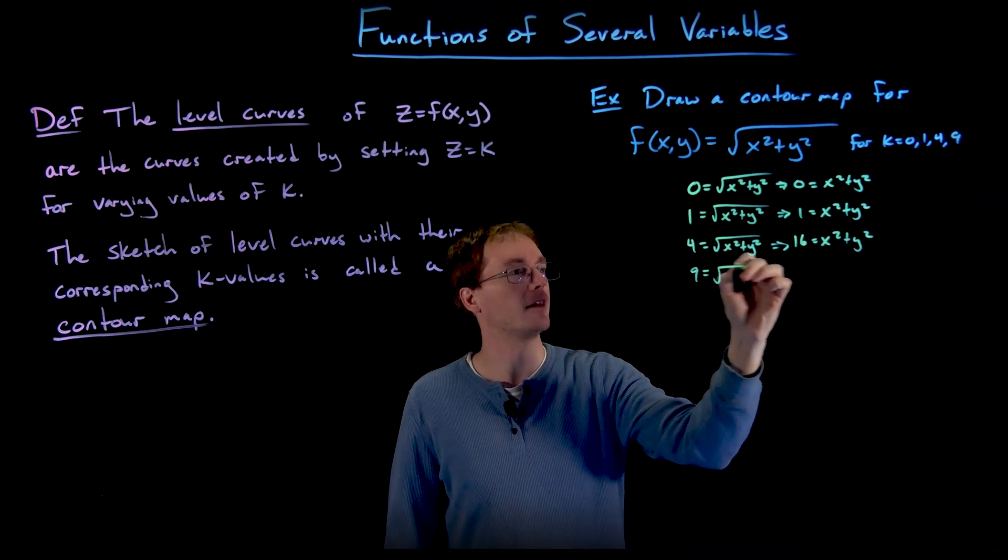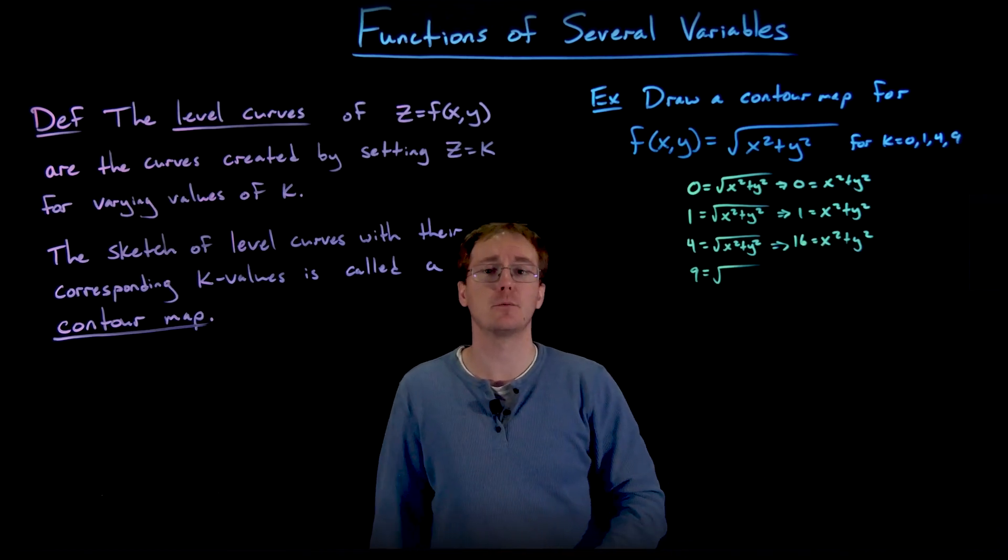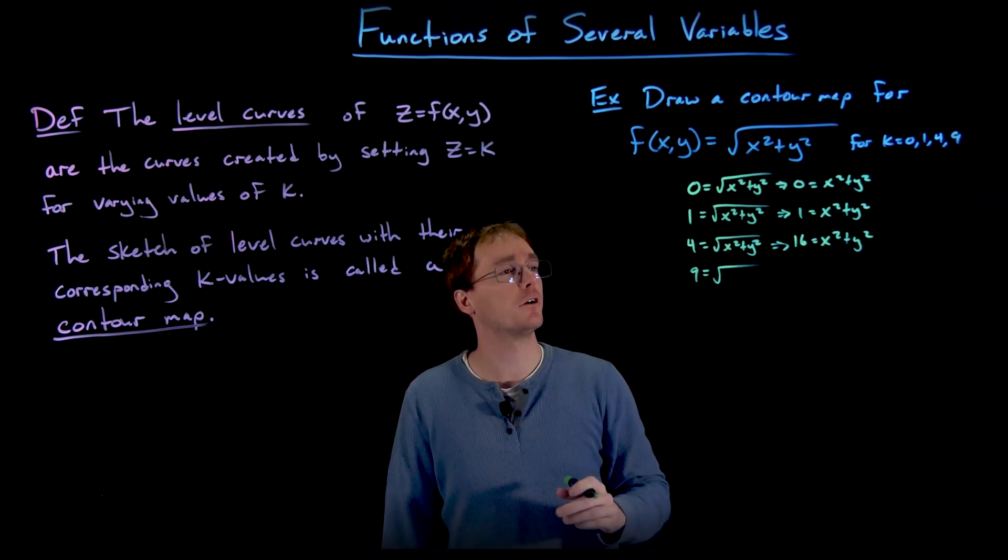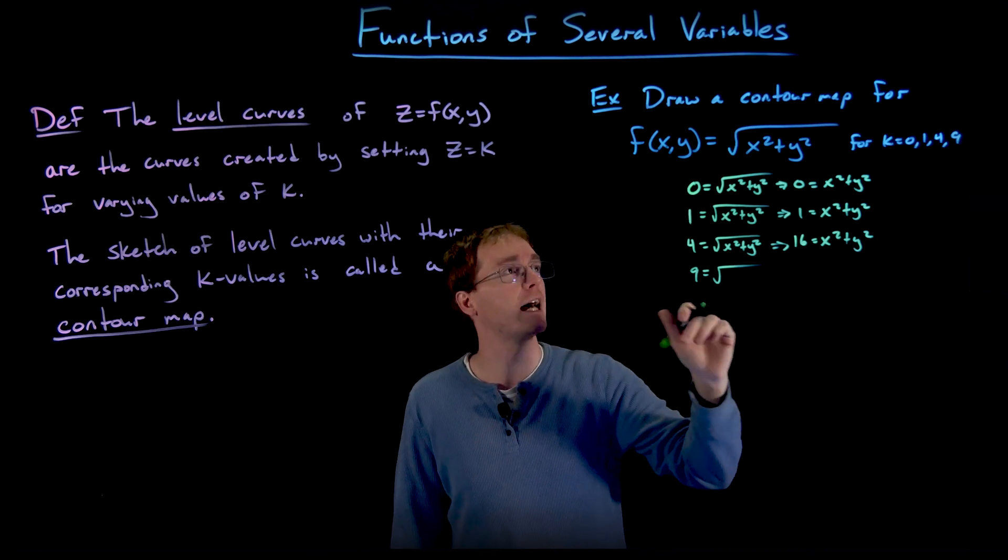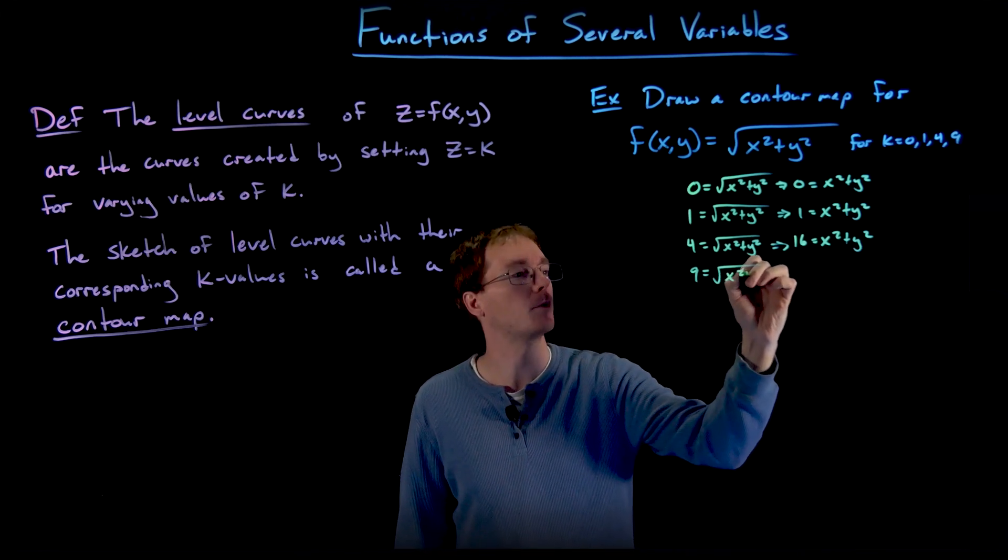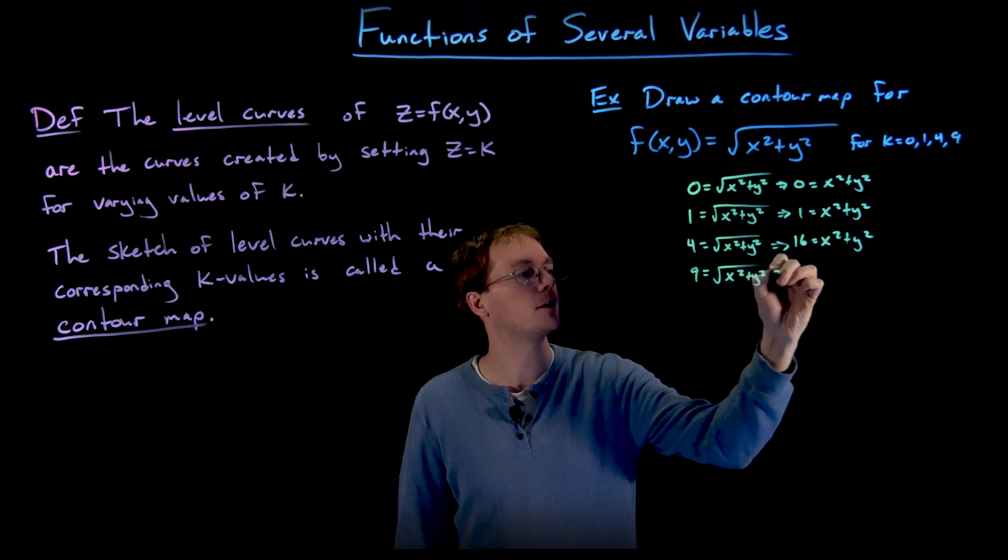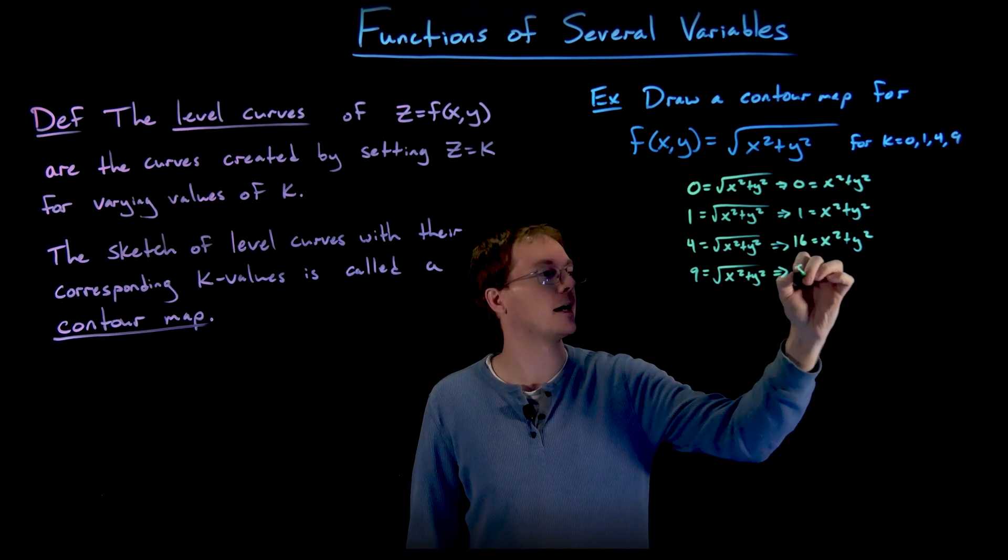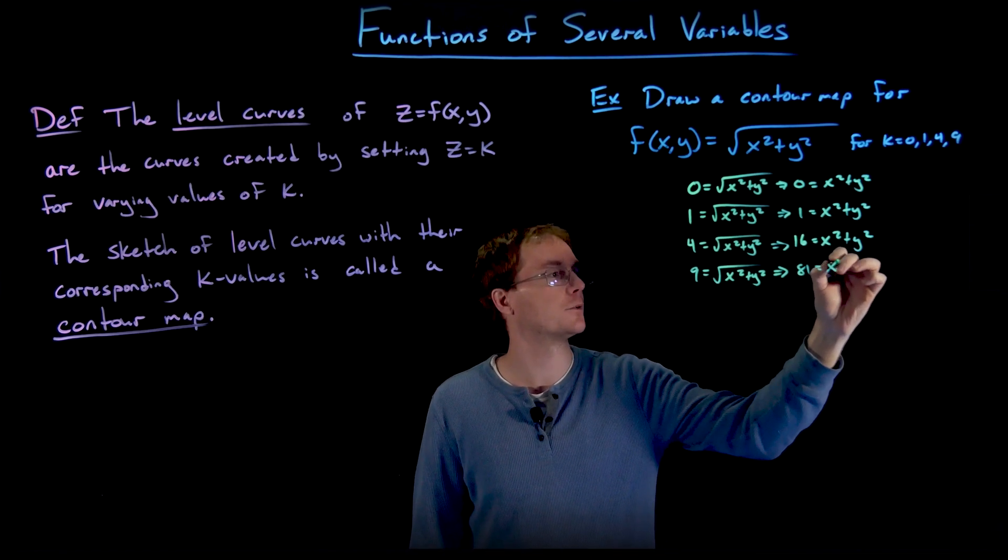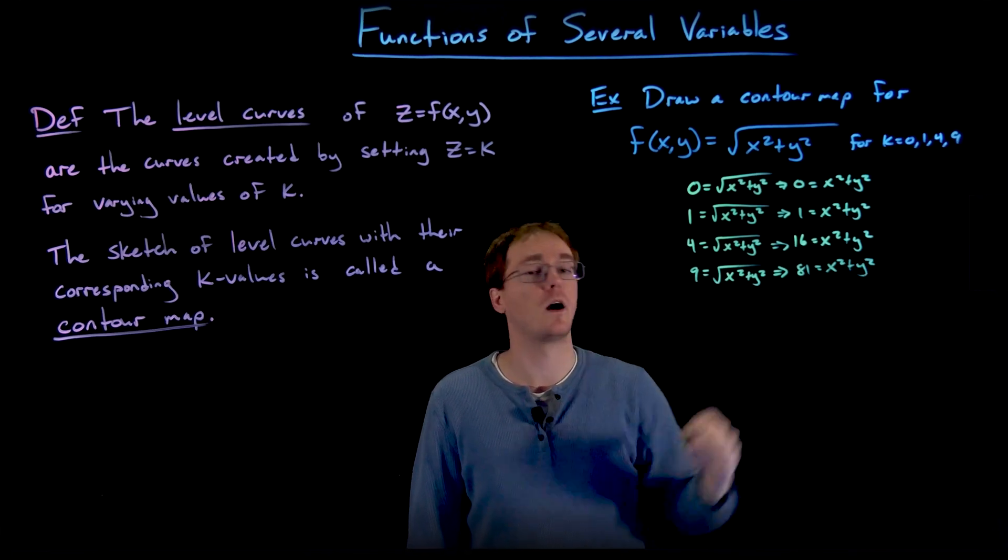And to finish this off, we have the last level curve corresponding to k = 9. Plugging that into our function for the output gives us 9 = √(x² + y²). But if we square things and move things around like we have for the other ones, we get 81 = x² + y².